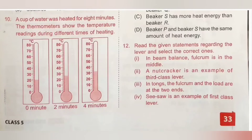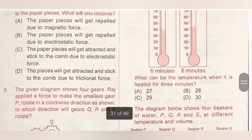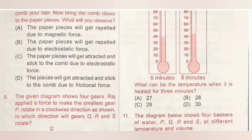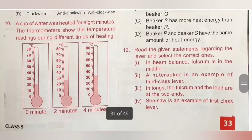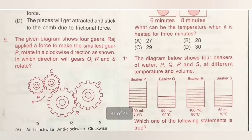Question 10: A cup of water was heated for eight minutes. The thermometer shows temperature readings at zero, two, four, six, and eight minutes. What can be the temperature when heated for three minutes? The figure shows 26°C at two minutes and 32°C at four minutes. Temperature at three minutes = (26 + 32) ÷ 2 = 58 ÷ 2 = 29°C. Option C is the correct answer.